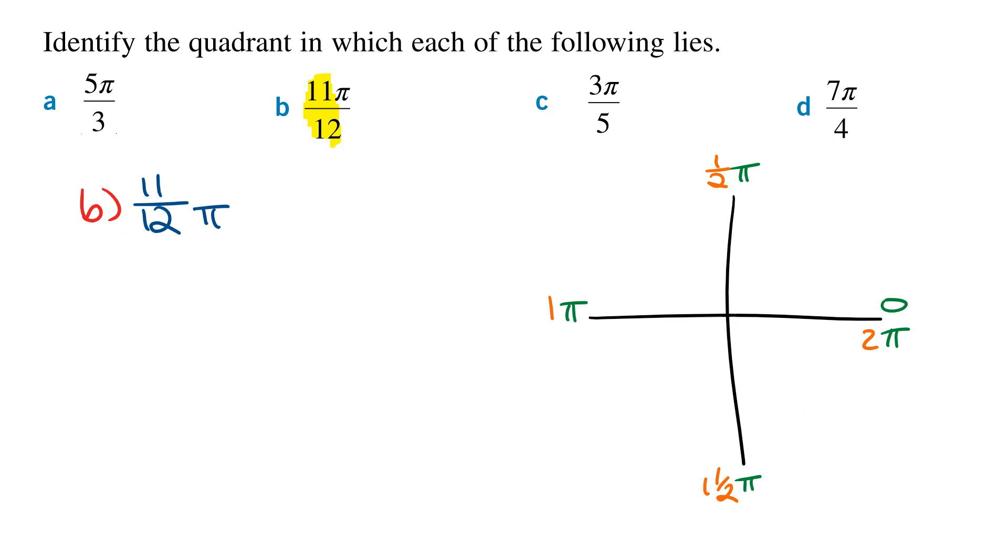Now we know that 11/12 is more than a half, because 6/12 will equal a half. And so 11/12 of π is going to be more than a half of π, but less than 1π. And so 11π/12 is going to lie in the second quadrant.